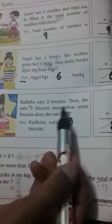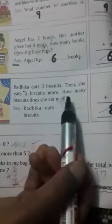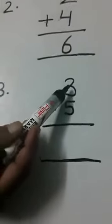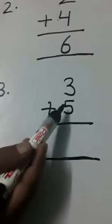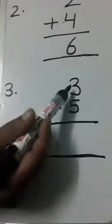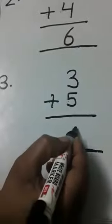Then she eats 5 biscuits more. More means plus. How many biscuits does she eat in all? Tell me, how many biscuits did she eat in total? Radhika eat 3 biscuits, 5 biscuits more. More means plus. Now 3 plus 5, we get the answer 8.